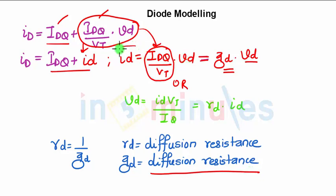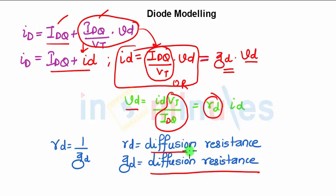Similarly, I can rearrange this equation as Vd = id × Vt/IDQ, which can be written as Vt/IDQ can be replaced by Rd. So it is the diffusion resistance times current. Voltage is current times resistance - Ohm's law. Hence, we get diffusion resistance and diffusion conductance. The second part is the diffusion conductance and first is the diffusion resistance.